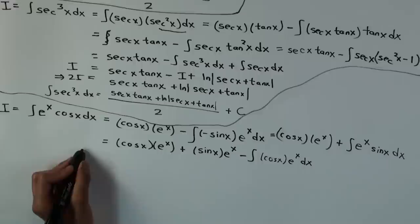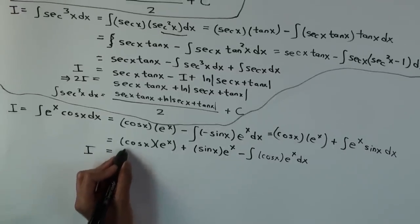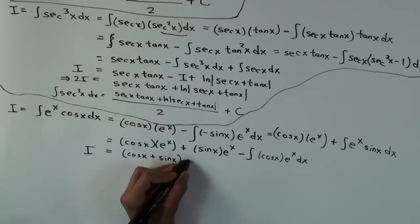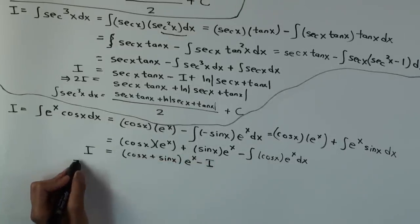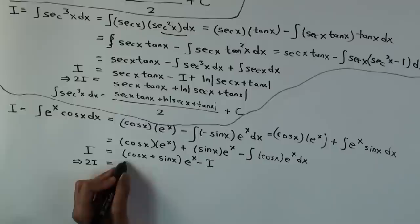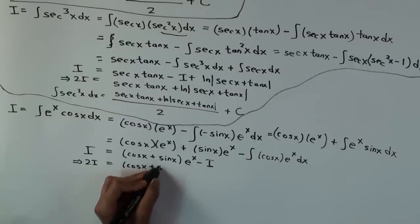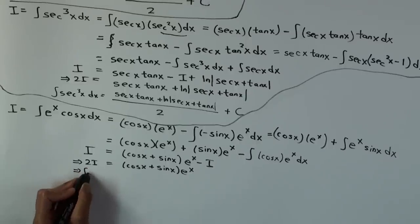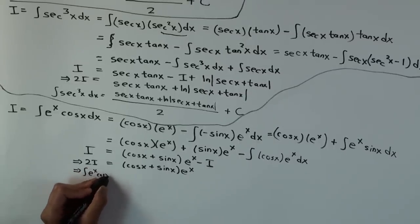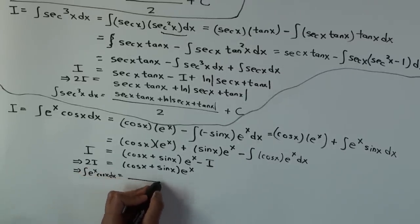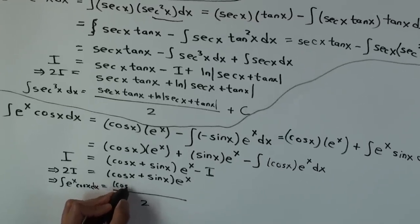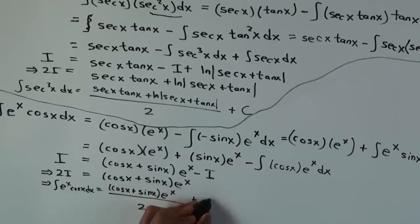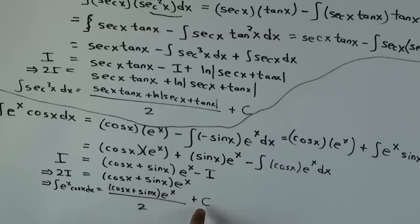What is that last integral? It's again I. So what I get is: I = cos(x)·eˣ + sin(x)·eˣ − I. Therefore 2I = (cos(x) + sin(x))·eˣ, and the integral of eˣ·cos(x) dx equals (cos(x) + sin(x))·eˣ / 2 plus C.